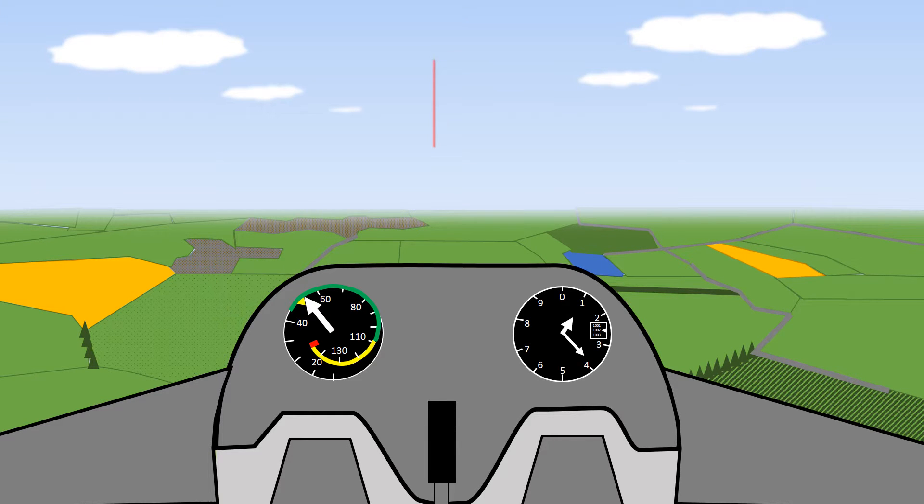Being able to fly in a straight line is a fundamental skill for a pilot. To tell if the glider is flying straight, we use the same visual clues we use in the turn.